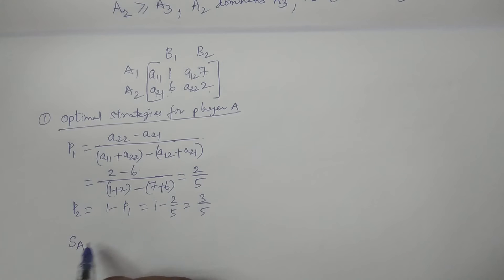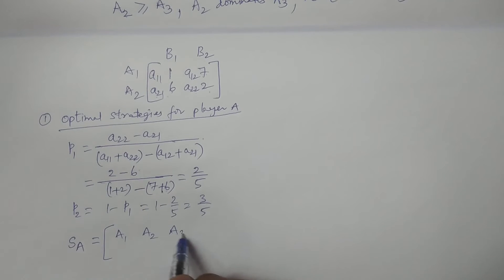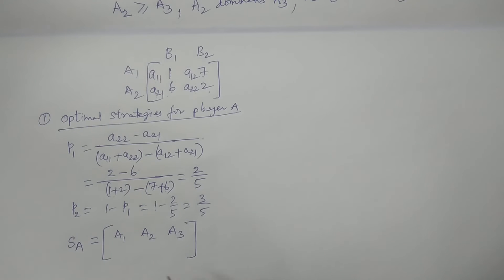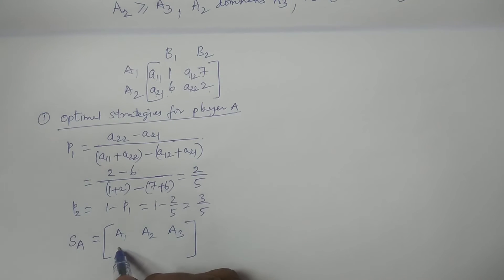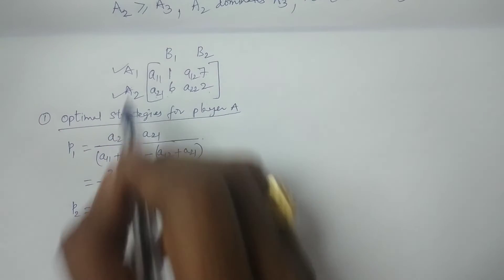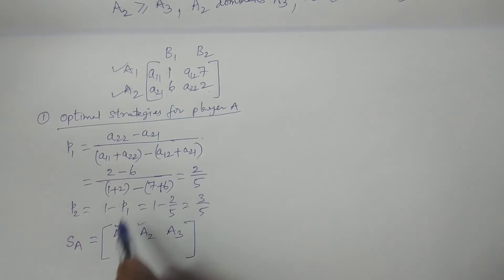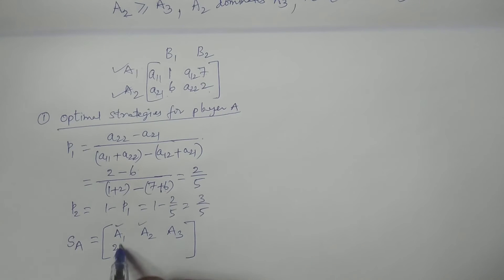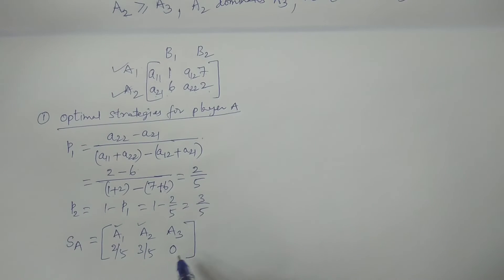Therefore, optimal strategies for Player A: SA = {A1, A2, A3} with 3 strategies. Player A chooses A1 and A2 as the active strategies. The probability values are P1 = 2/5 for A1, P2 = 3/5 for A2, and 0 for A3 (deleted strategy).